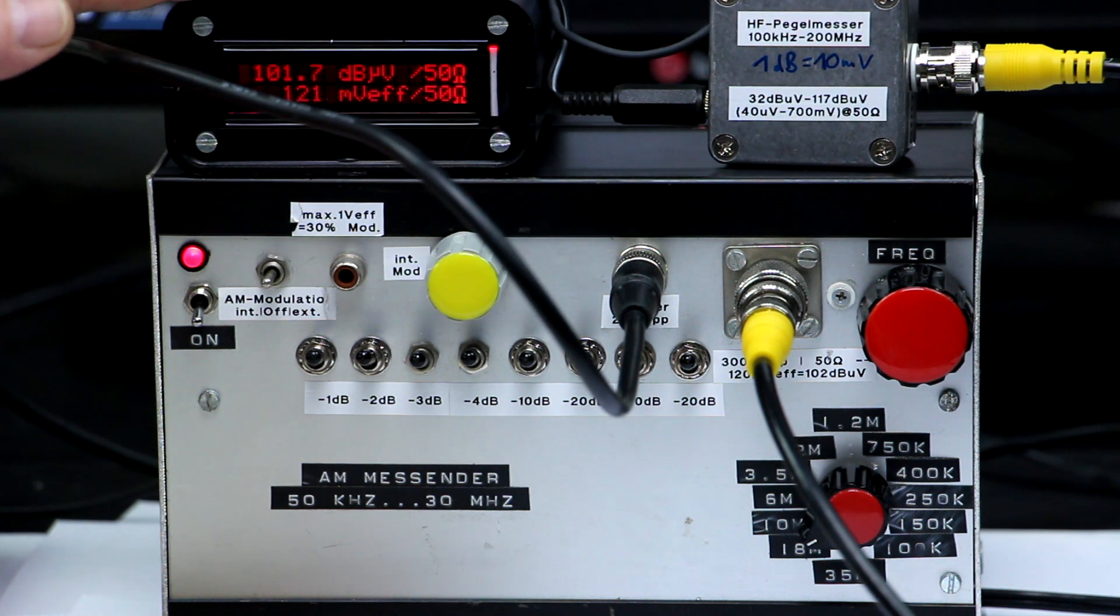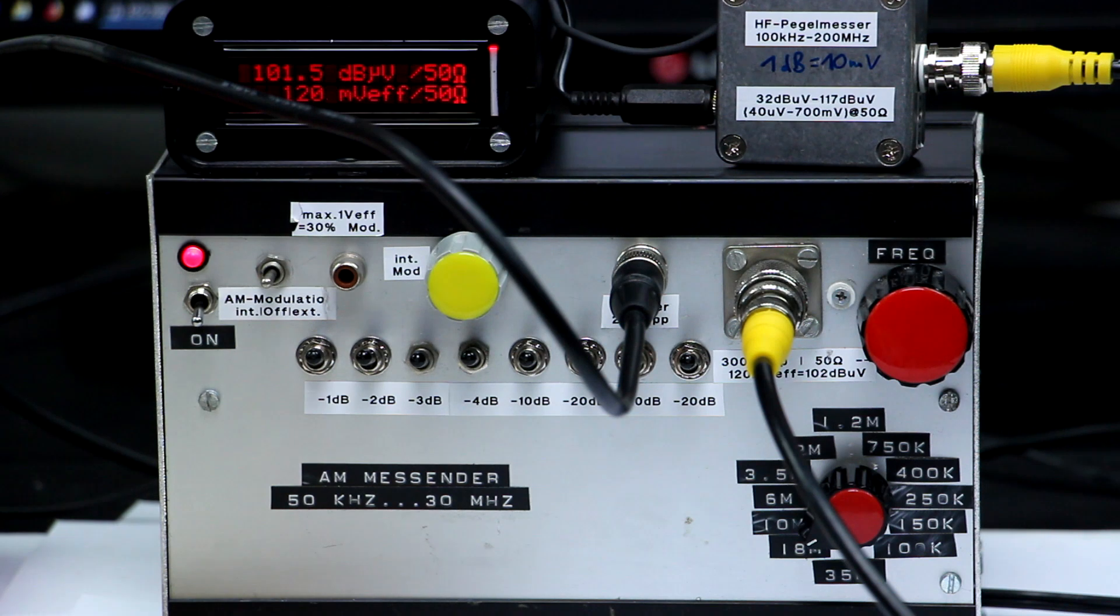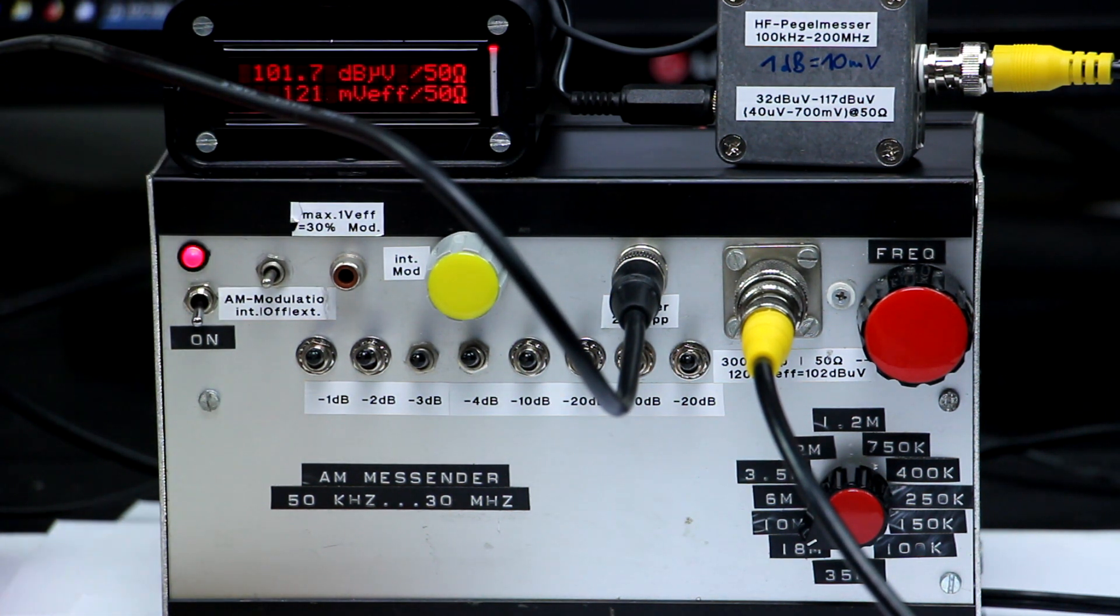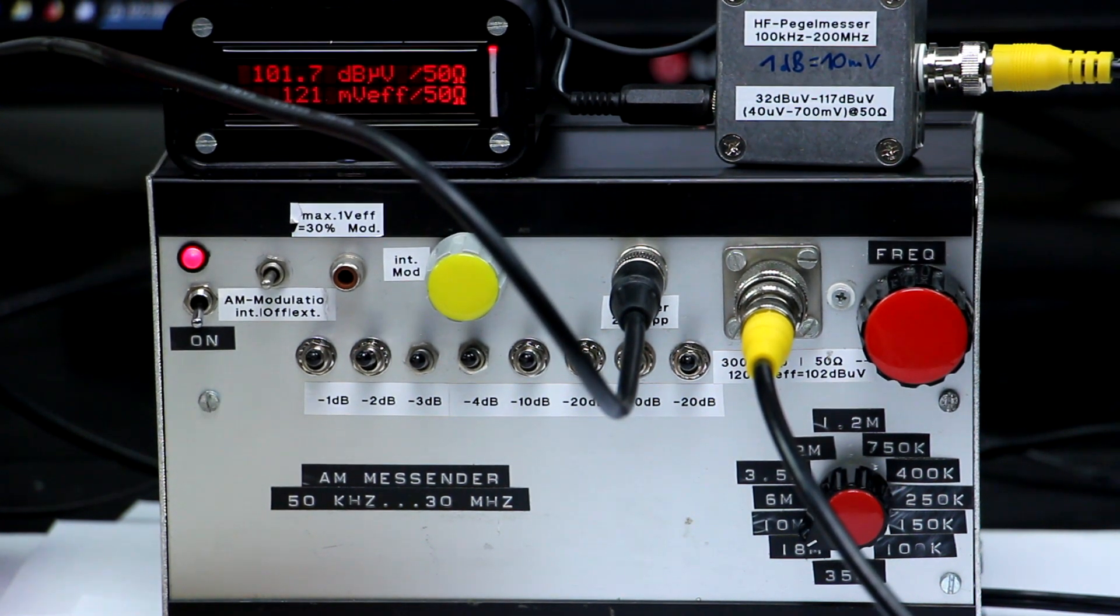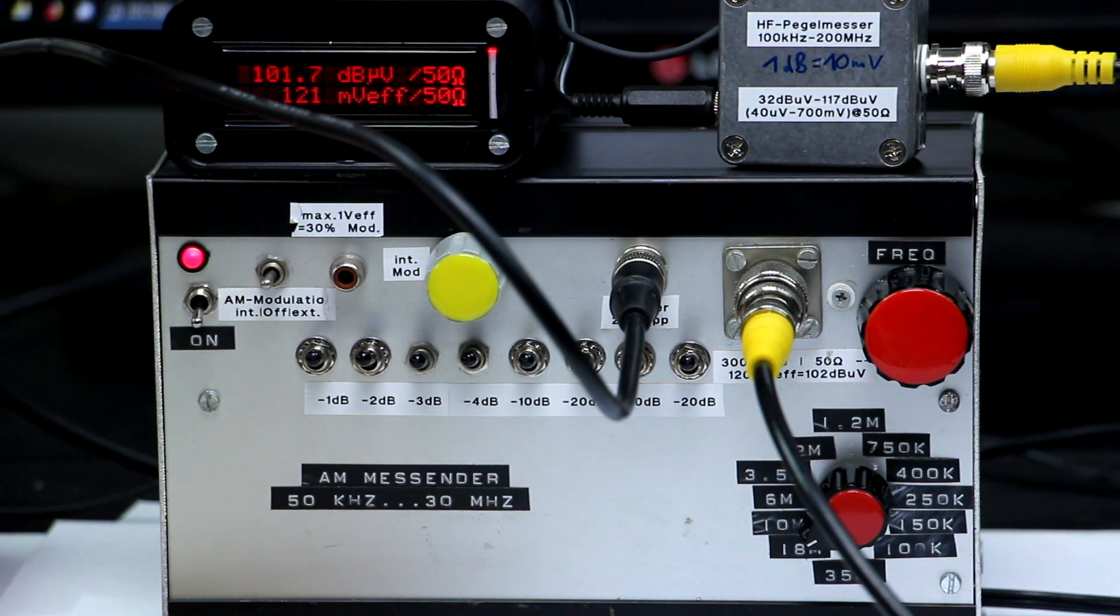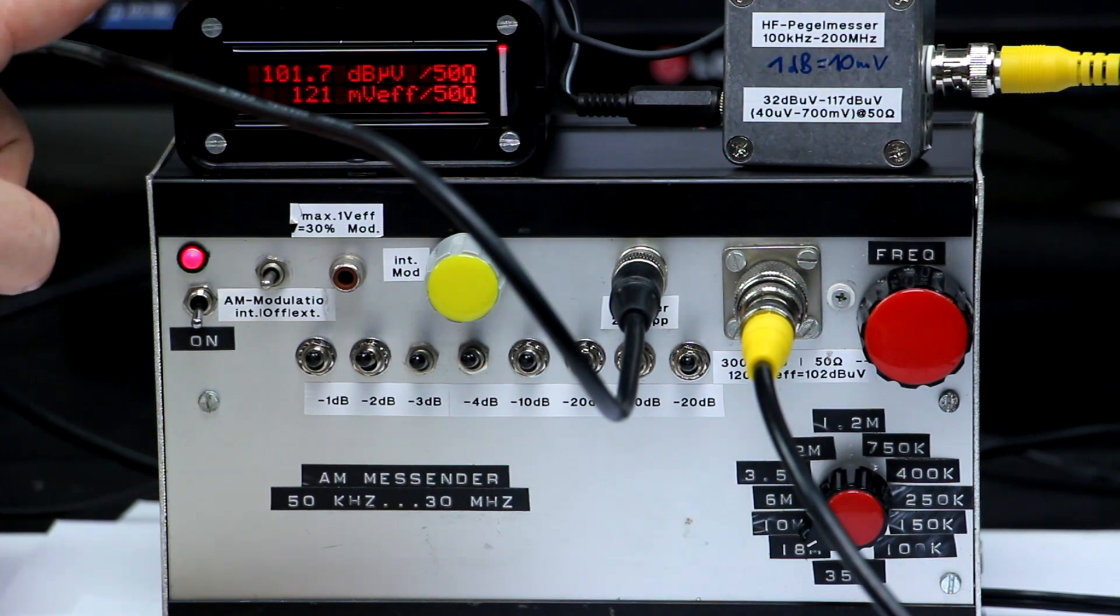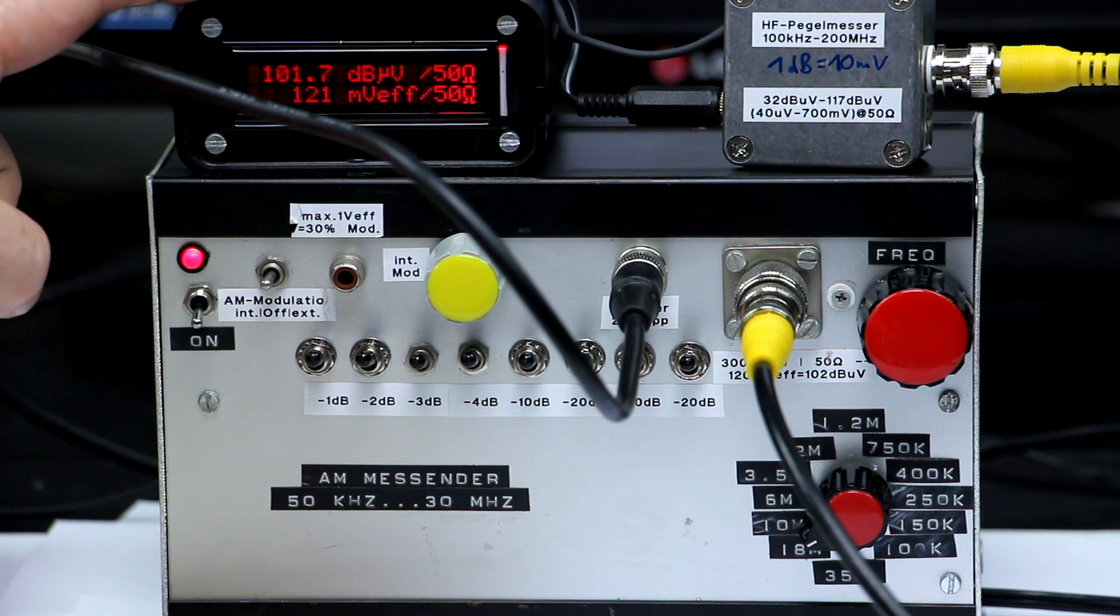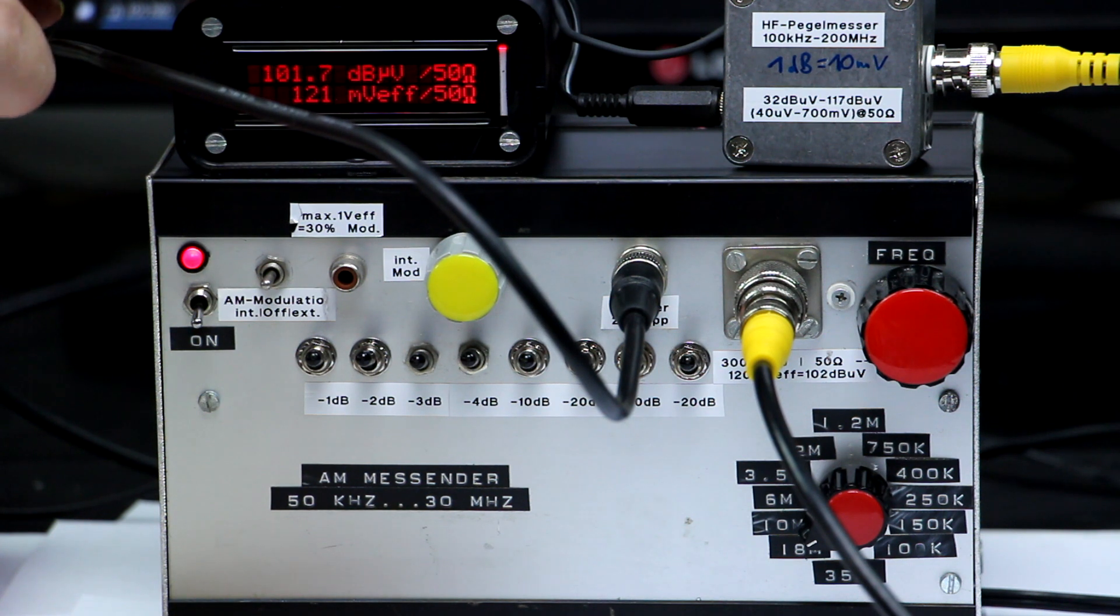This is a little home built microcontroller controlled display that simply calculates from the output voltage from this log converter the dB microvolts value or the millivolts value. You can do any kind of measurements like this. You can make relative measurements, switch from microvolts to dB milliwatts, switch from 50 to 75 ohm load, or instead of measuring the RMS value you can also measure or display peak to peak. I made this thing simply because when you're dealing with radio frequency levels you have all the different definitions - sometimes you need dB microvolts, sometimes dB milliwatts, etc.